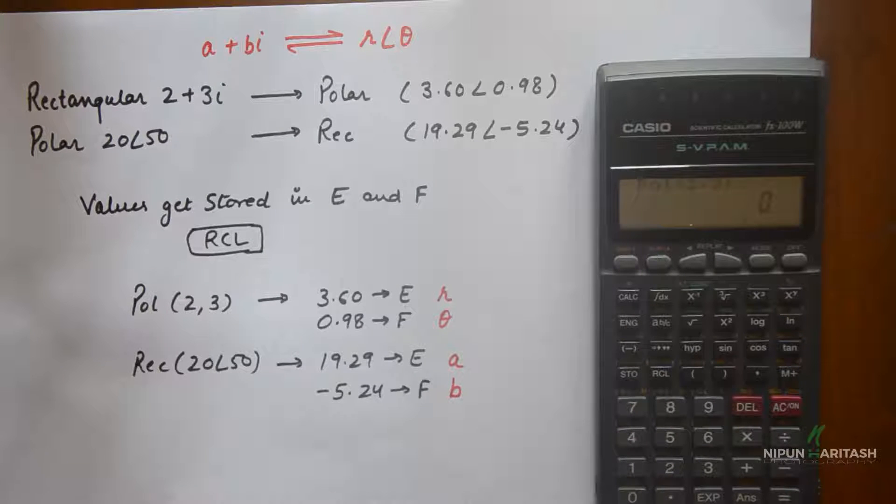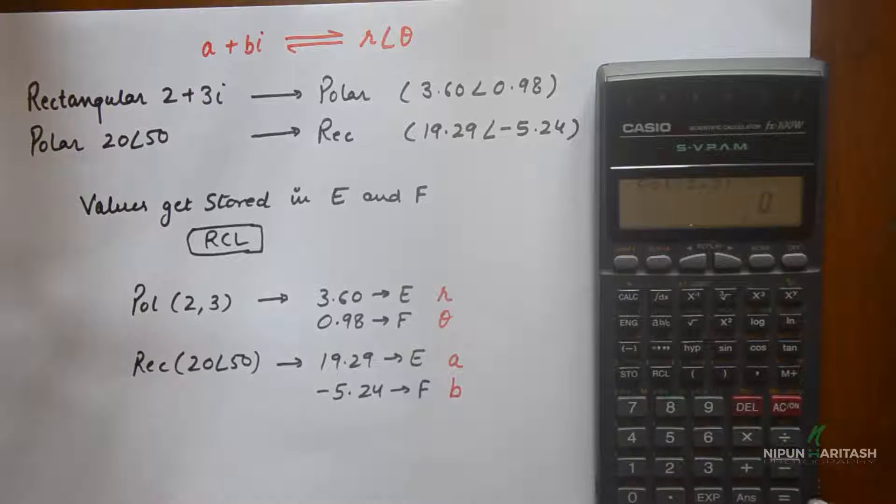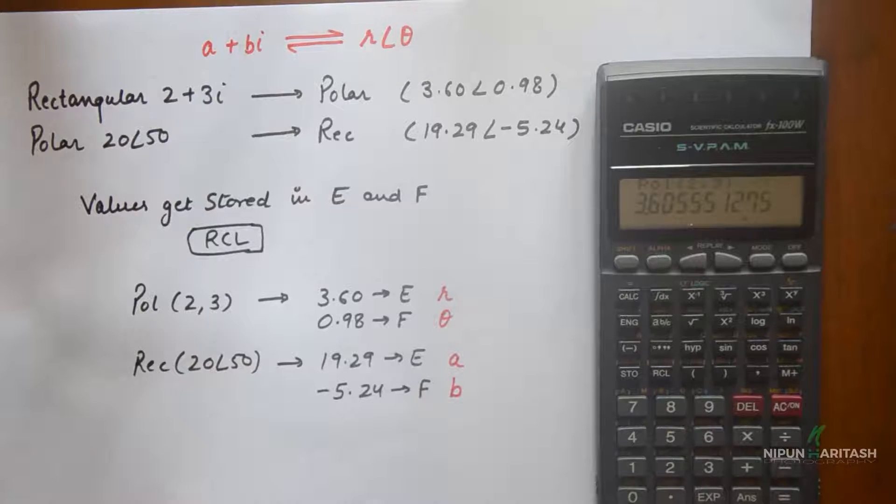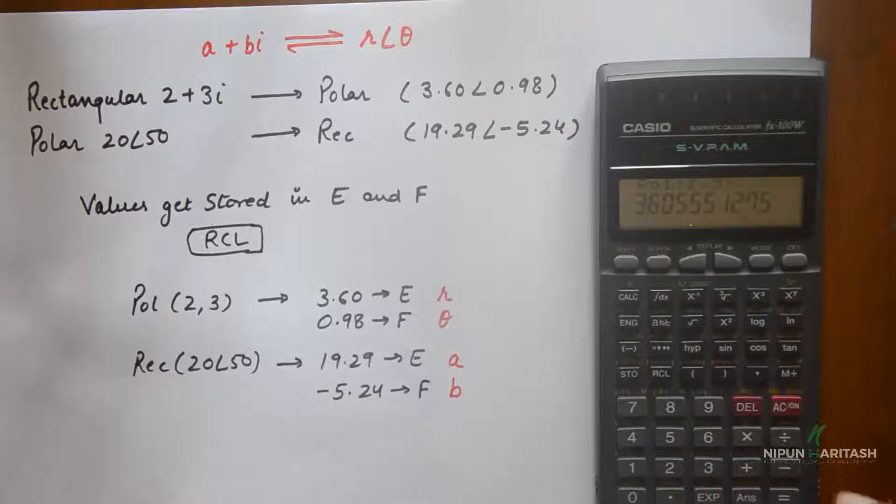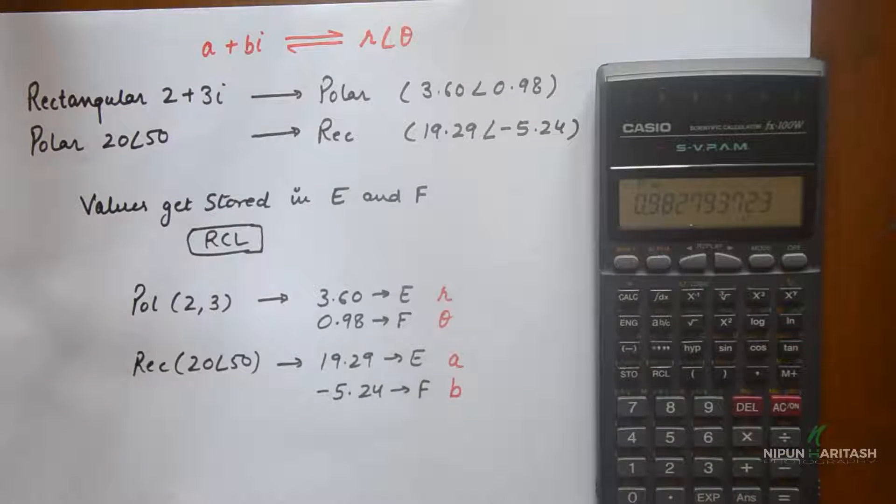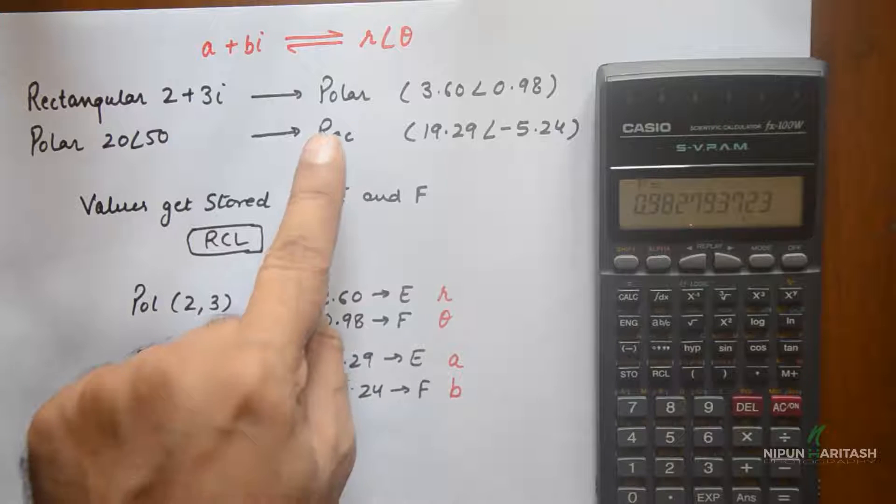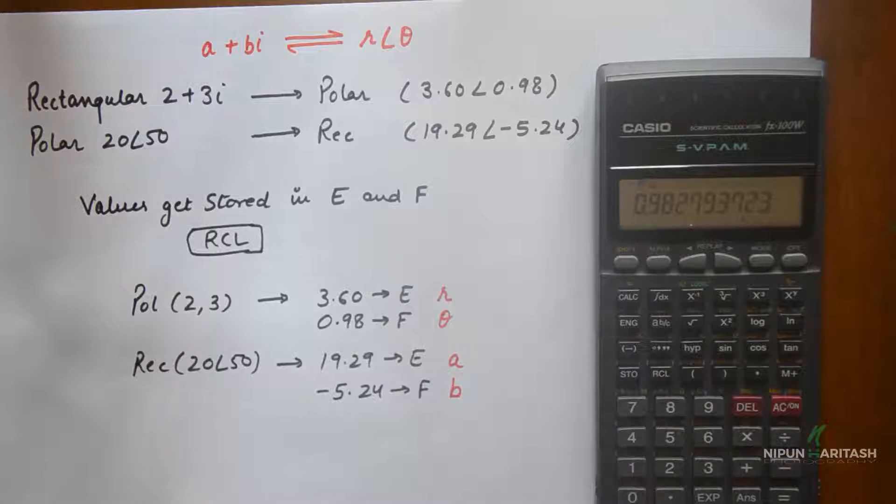So that's how you do this. You want to convert 2 plus 3i into polar, so that's how you enter it and then you press equal. So 3.60 is the R, and then if you press RCL and F, 0.98 is the angle in radians. So the conversion rectangular 2 plus 3i which is polar 3.60 angle 0.98 is seen like this.